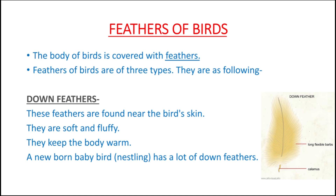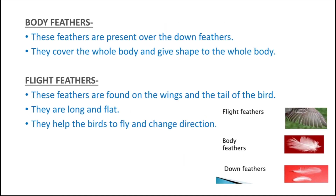The first type is down feathers. These feathers are found near the bird's skin. They are soft and fluffy and they keep the body warm. A newborn baby bird has a lot of down feathers. A newborn baby bird is also called a nestling. They have lots of down feathers.